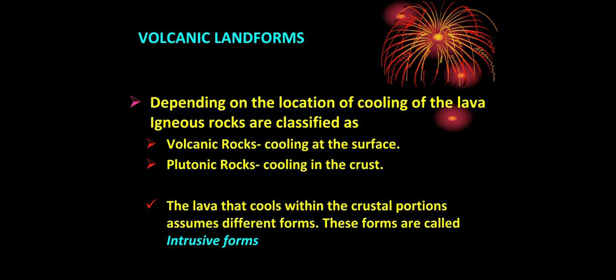The lava released during volcanic eruption cools and solidifies into igneous rocks, also known as primary rocks. The cooling may take place either on reaching the surface or while the lava is still in the crustal portion. Igneous rocks are classified into two parts: those cooling at the surface are known as volcanic rocks, and those cooling in the crust are known as plutonic rocks.